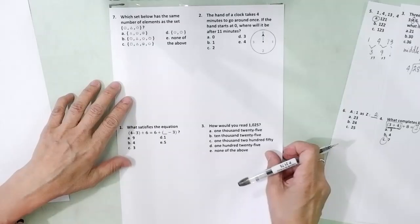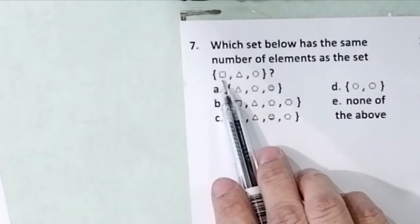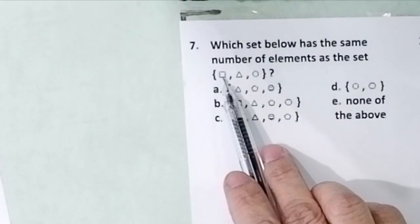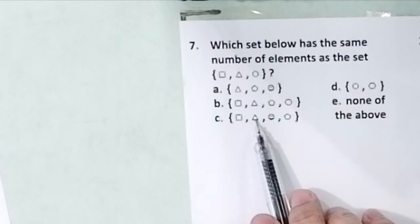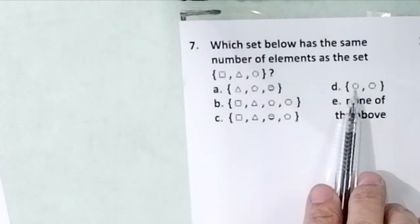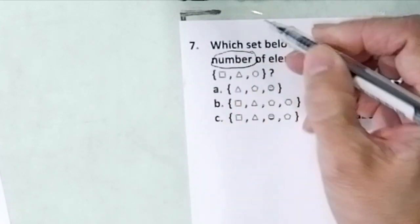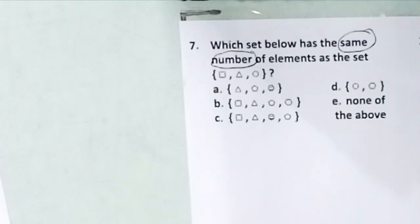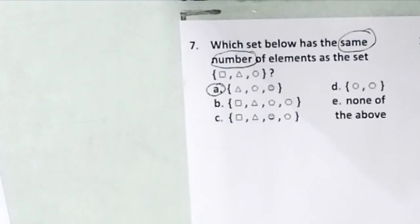Problem number 7. Which set below has the same number of elements as the set whose elements are square, triangle, circle? Many students get this wrong because they try to choose an option which has a square, a triangle, and a circle — they are not reading the problem well. The problem asks for the same number of elements. Count the elements: 1, 2, 3. So the correct answer is letter A, which also has 3 elements.